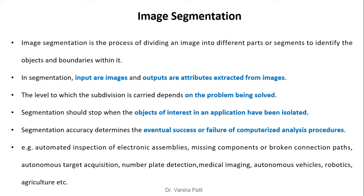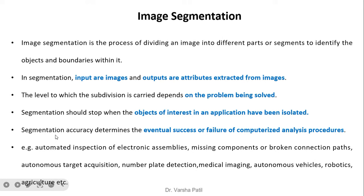In segmentation, the input is images while the outputs are attributes extracted from images. The level to which subdivision is carried depends on the problem being solved. Segmentation should stop when the objects of interest have been isolated. Segmentation accuracy determines the eventual success or failure of a computerized analysis procedure, so the success of any image processing application depends mainly on the segmentation process.